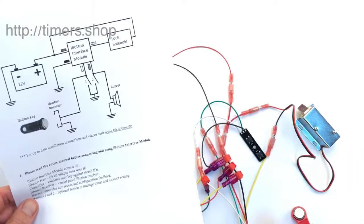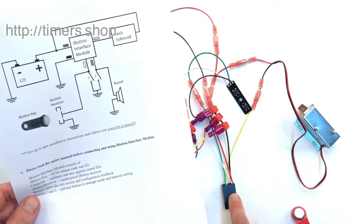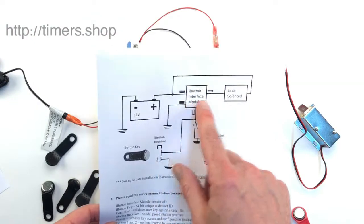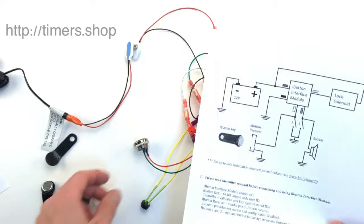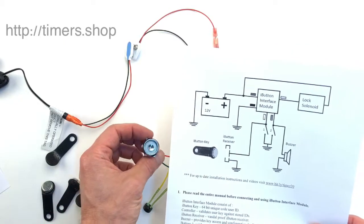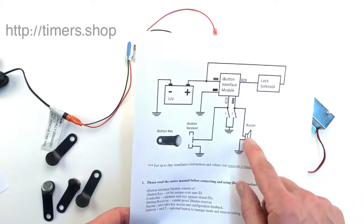The iButton interface is a small module that connects to the power supply, a solenoid lock, the iButton receiver, and a buzzer.